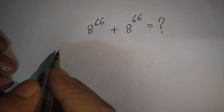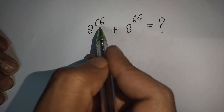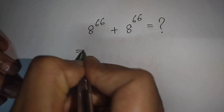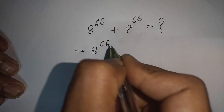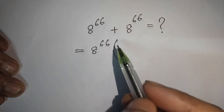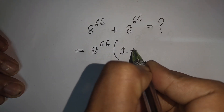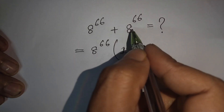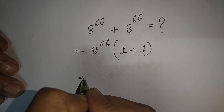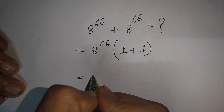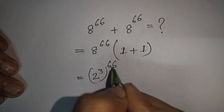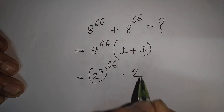Next problem: simplify 8 to the power 66 plus 8 to the power 66. First, take out the common factor 8 to the power 66. Inside the bracket, 8^66 over 8^66 gives 1, plus another 1, which equals 2. So we have 8 to the power 66 times 2.